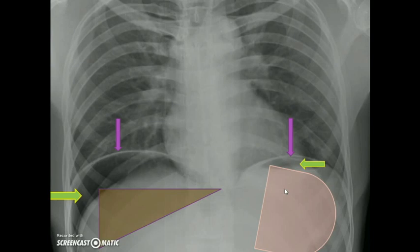Air under diaphragm is also called pneumoperitoneum. When you look for air under diaphragm, always look on the right side — above the liver, below the diaphragm.